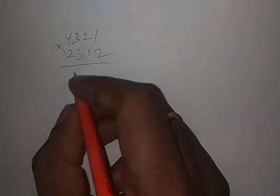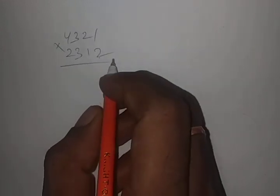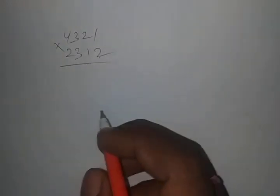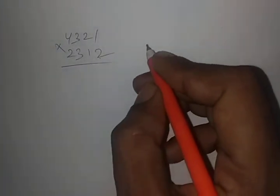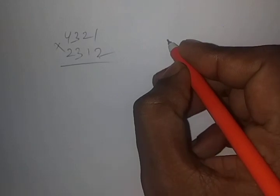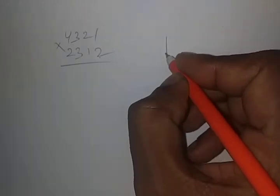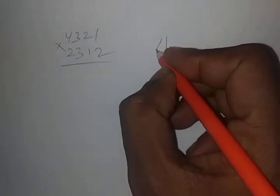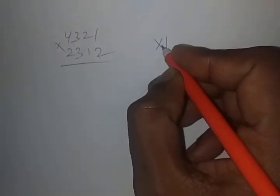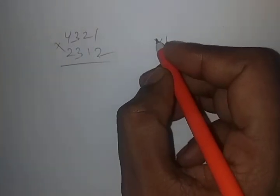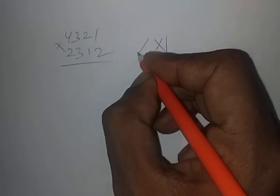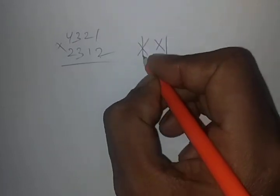We'll be able to do this. We'll have a diagram accordingly. First step, we're going to do the cross multiply. Next step, we're going to do the XM.